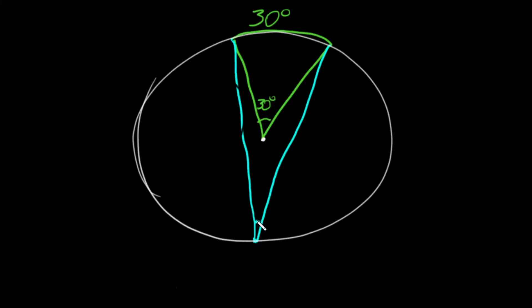The inscribed angle measures exactly one half of the arc that it intercepts. So because the arc that it intercepts measured 30 degrees, half of 30 would be 15. So the inscribed angle over here will measure 15 degrees.